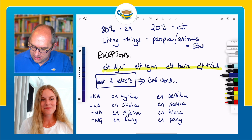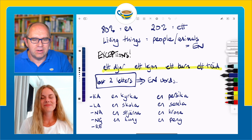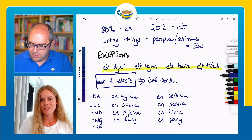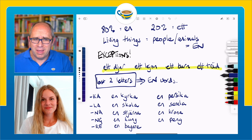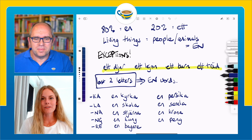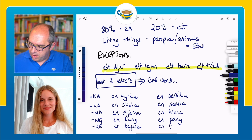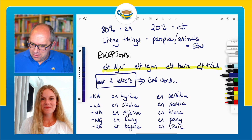We also have R-E as our last group. So these are all n-words, even though they don't fall into the living things category. We're going to look at two professions: en bagare — 'a baker' — and en förare — 'a driver.' Both ending in -re.